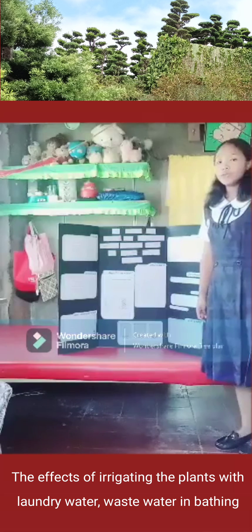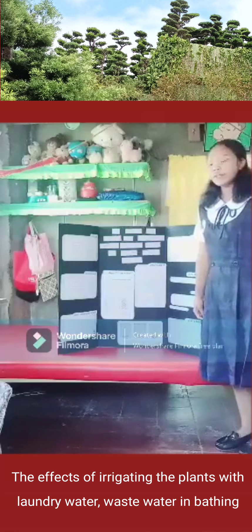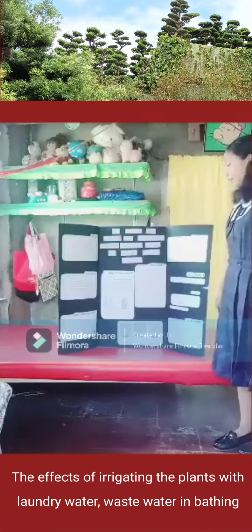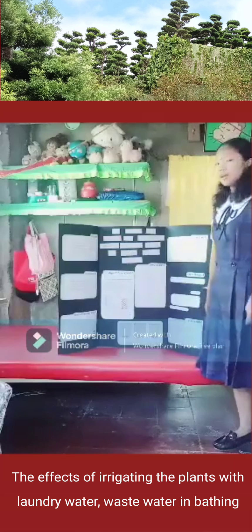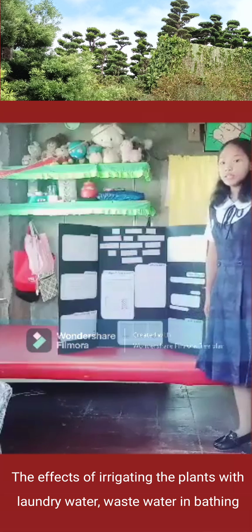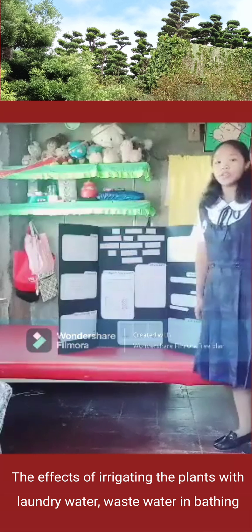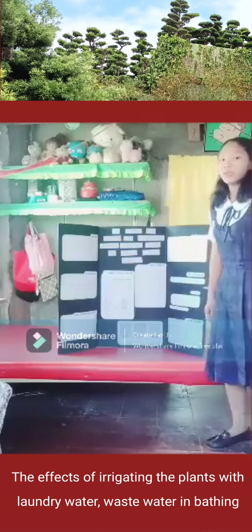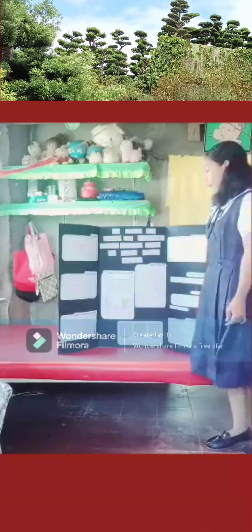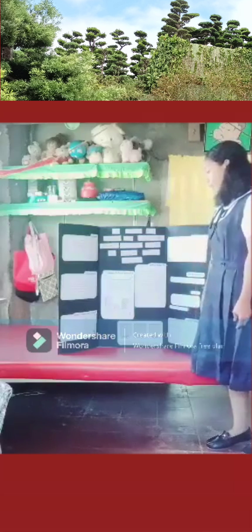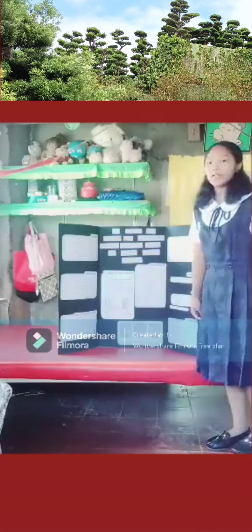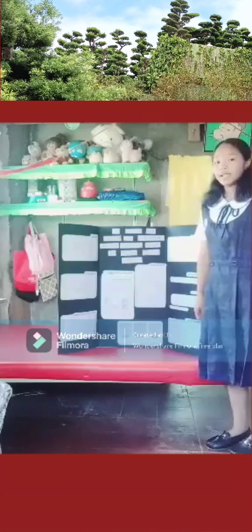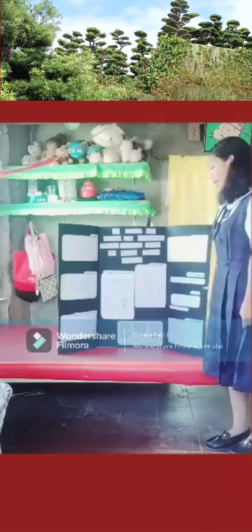If I could do this experiment again, the variable that I would change would be the type of water. I would use fish sauce and soy sauce instead of laundry water and wastewater in bathing. I would also change the type of water to mineral water, to see if the plant heights will increase or the plants will die.